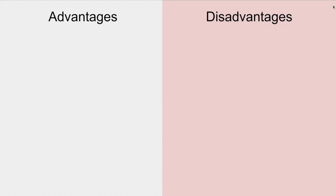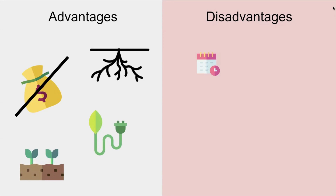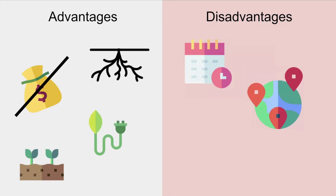Some advantages of mycoremediation are that it's inexpensive, energy-efficient, and good for the soil. Also, the mycelium is able to easily grow through a variety of substrates. Some disadvantages are that it takes a lot of time, you have to match the fungus to the pollutant environment, and it's not very well studied at the moment.